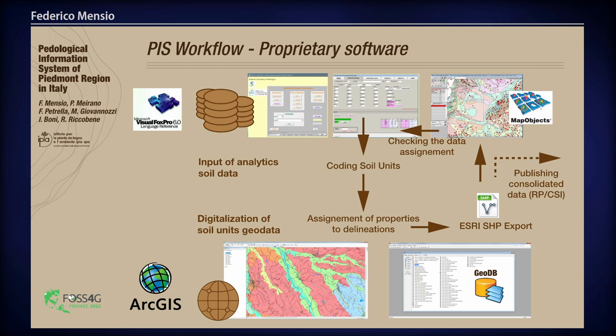For visualization of the data, it was not possible to link directly the personal geodatabase to Microsoft Visual FoxPro. So we needed to export the geodata with the properties of the soil units into a single ESRI shapefile. This file was passed to Visual FoxPro for checking the data assignment with map objects. Obviously this process is asynchronous, so there may be some errors due to mistakes made by the operators. After all errors are fixed, the consolidated data is published by the Piedmont region with the support of another public company called CSI.